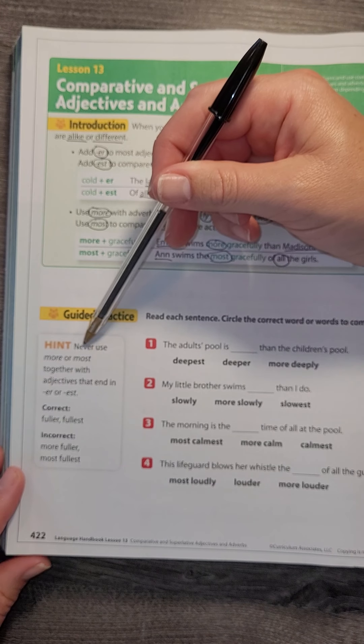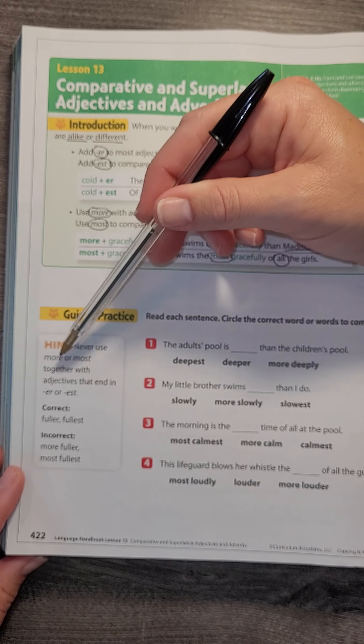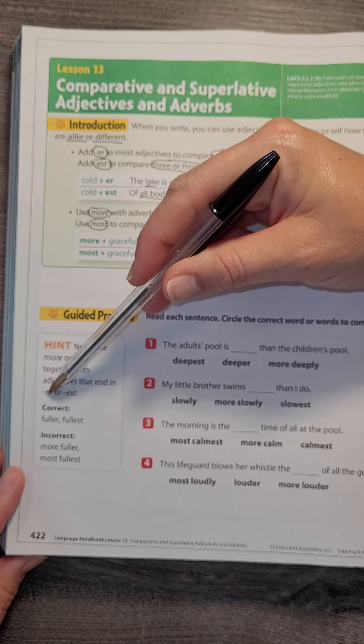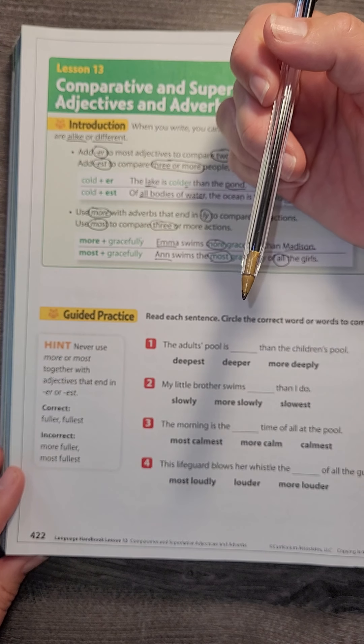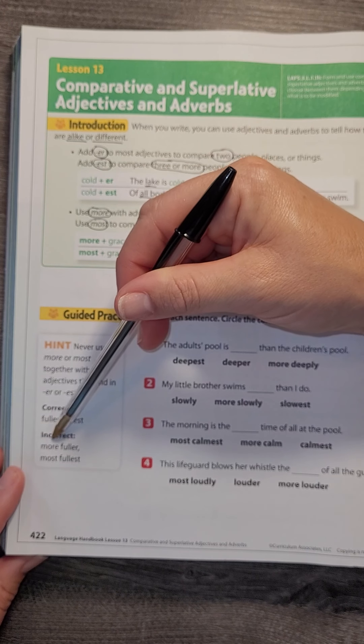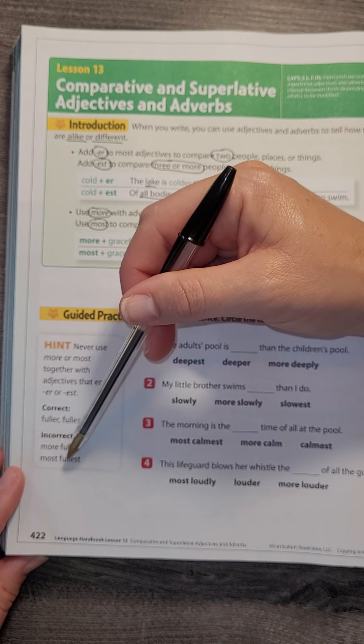So it says never use 'more' or 'most' together with adjectives that end in -er or -est. So we would say fuller or fullest, but we wouldn't say more fuller or most fullest.